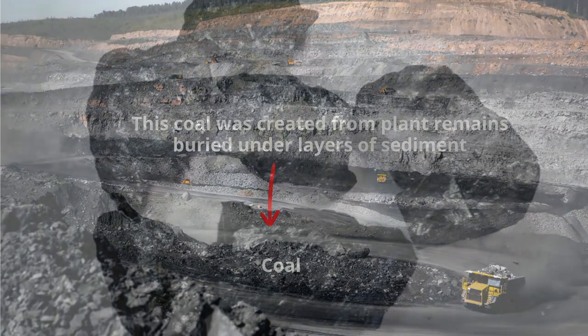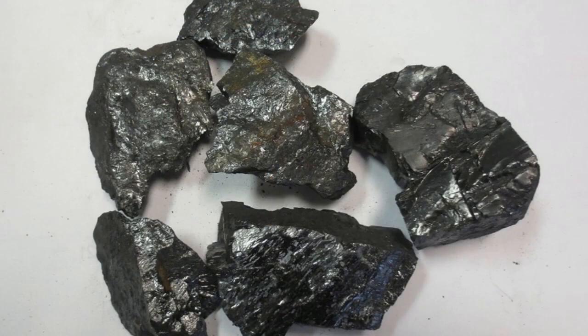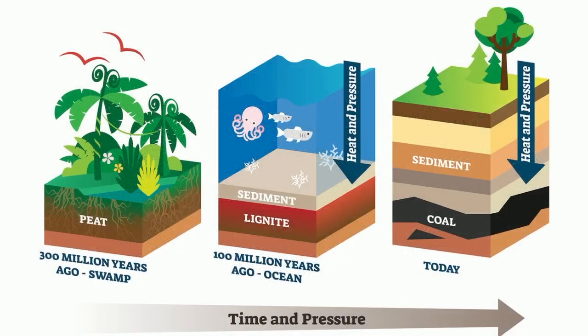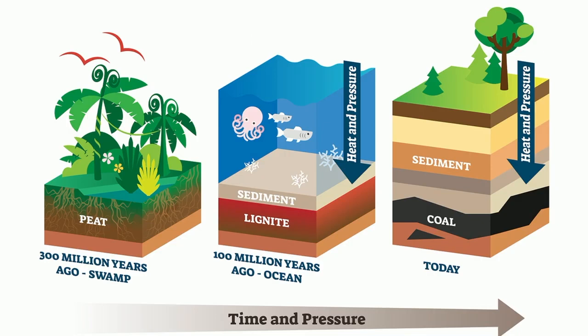Coal is an example of an organic sedimentary rock, and the way in which coal is created is typical of how organic sedimentary rocks form. Millions of years ago, plants and animals die and become buried. Over time, additional layers of peat, lignite, and sediment are added to the original organic matter. Eventually, all of this sediment and organic matter accumulates and is transformed by pressure and heat into coal.